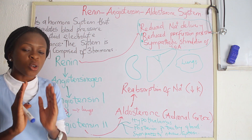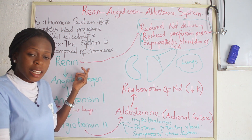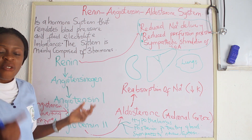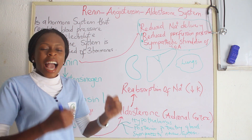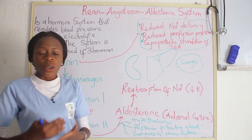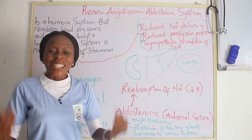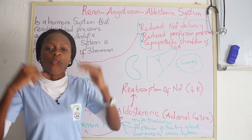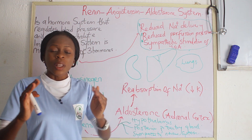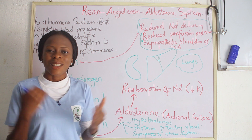To summarize: Renin is produced in the juxtaglomerular apparatus of the kidney. It acts on angiotensinogen and converts it to Angiotensin 1. Angiotensin-Converting Enzyme then converts Angiotensin 1 to Angiotensin 2, which stimulates Aldosterone release from the adrenal cortex. Aldosterone leads to sodium reabsorption, followed by water reabsorption, increasing fluid volume in the intravascular space and regulating blood pressure.